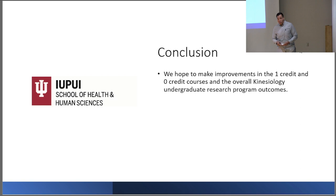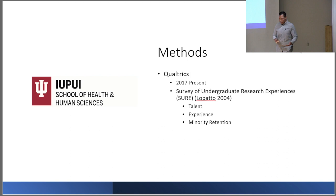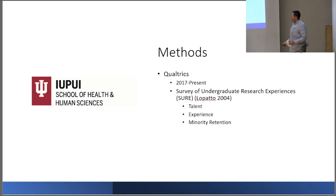Every student that has taken the course will receive an email. It will assess their academic standing, their demographics, their goal of training, their current achievements, and the number of times they've enrolled in the undergraduate research program.